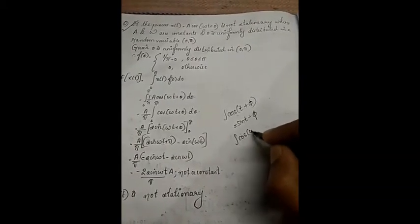The integral of cos(ωt + θ) with respect to θ equals sin(ωt + θ).